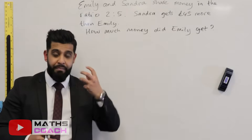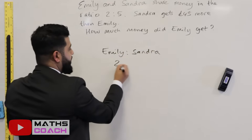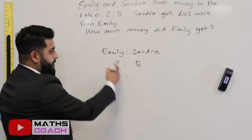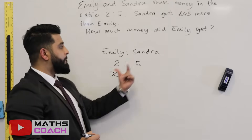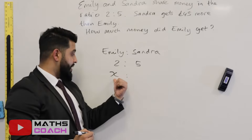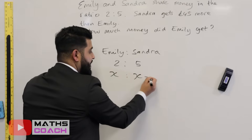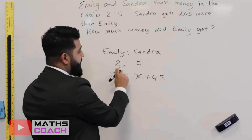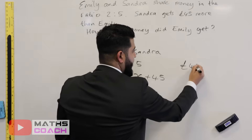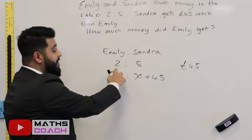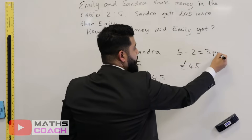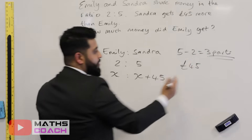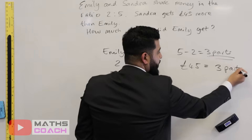You'll notice you are not given an amount to divide. Emily and Sandra share in the ratio two to five. Since we don't know what Emily got, we write x. Sandra got 45 pounds more, so Sandra is x plus 45. The difference between them is 45 pounds. In terms of ratio parts, five minus two equals three parts — Sandra's extra amount corresponds to those three extra parts.